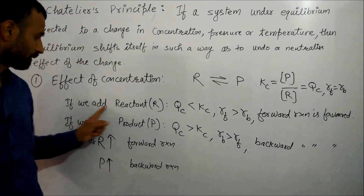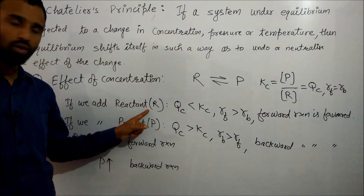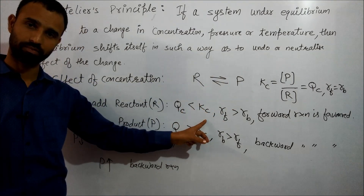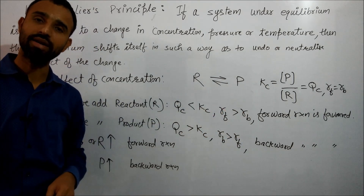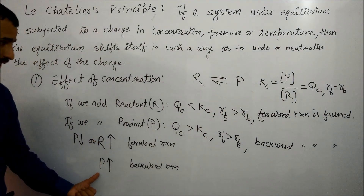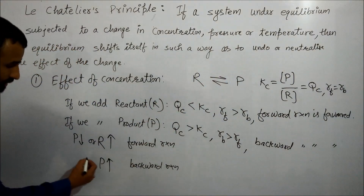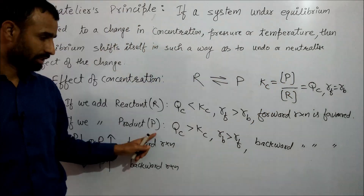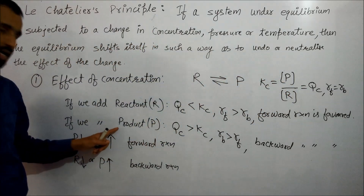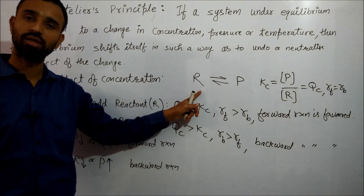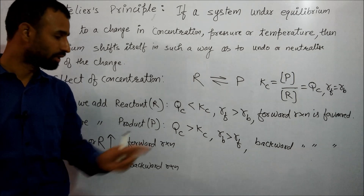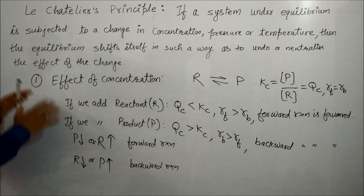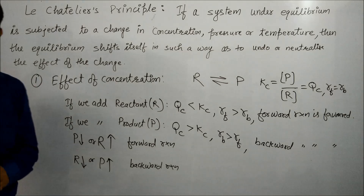At the same time, if we add reactant or remove product, in both cases Qc becomes less than Kc and forward reaction is greater than backward reaction. If we increase the product or decrease the reactant, then Qc becomes greater than Kc, so backward reaction is favored. This is the complete effect of concentration.